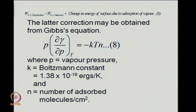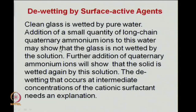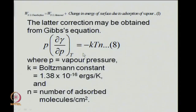WSL equal to gamma_LA(cos theta + 1) may also be used for obtaining the work of adhesion from measured S and theta. If there is adsorption of a monolayer, the work of adhesion will refer to the monolayer-covered solid surface. The correction is done as follows: to the measured WSL for the monolayer-covered surface, add the change in free energy of the surface due to adsorption of vapour. This can be done using Gibbs's equation: P times (partial derivative of surface tension with respect to P at constant temperature) equals minus kT n, where n is the number of adsorbed molecules per centimeter square and k is Boltzmann's constant, 1.38 × 10⁻¹⁶ ergs per Kelvin.